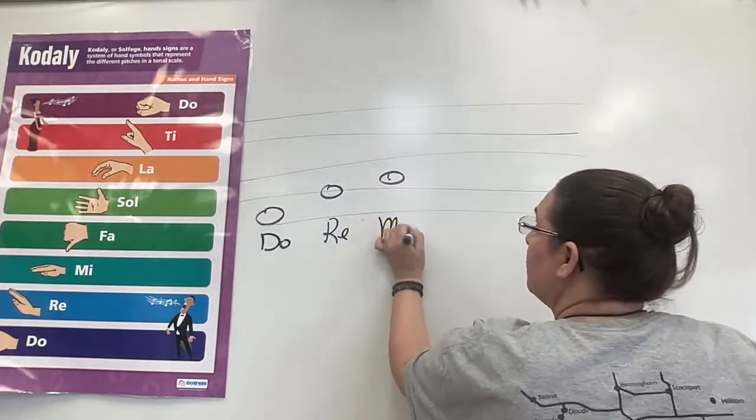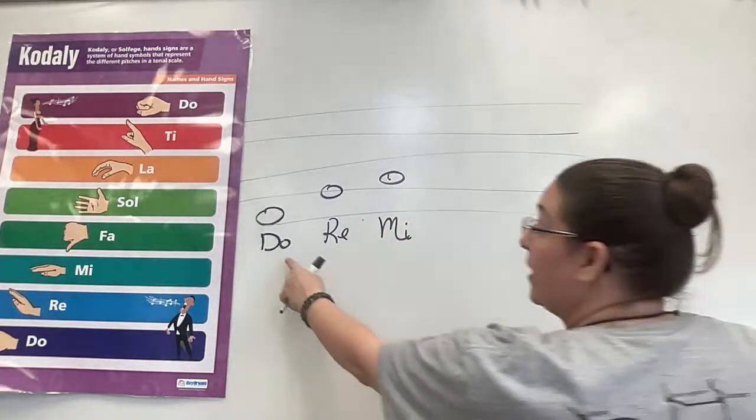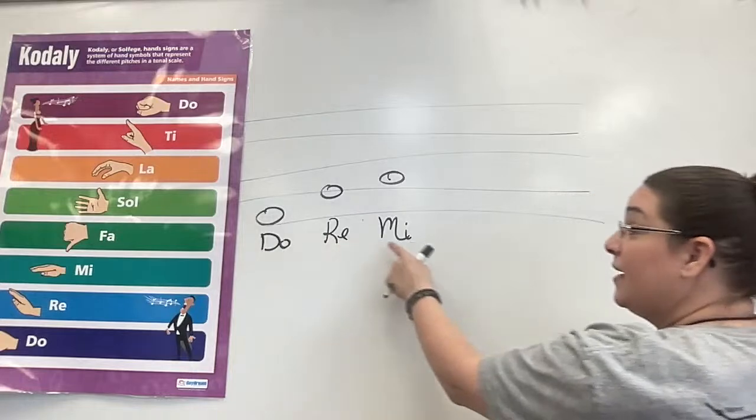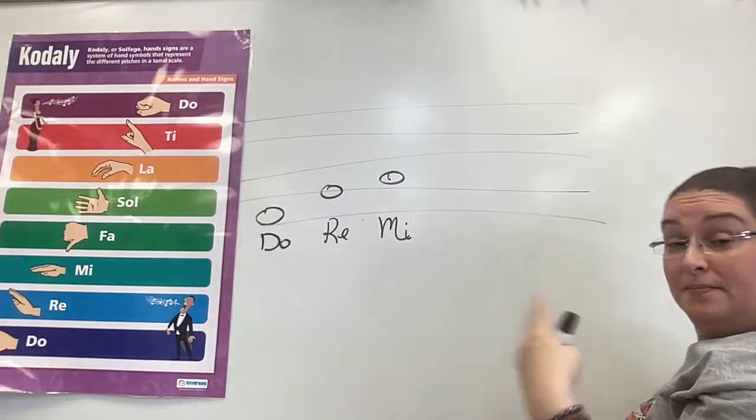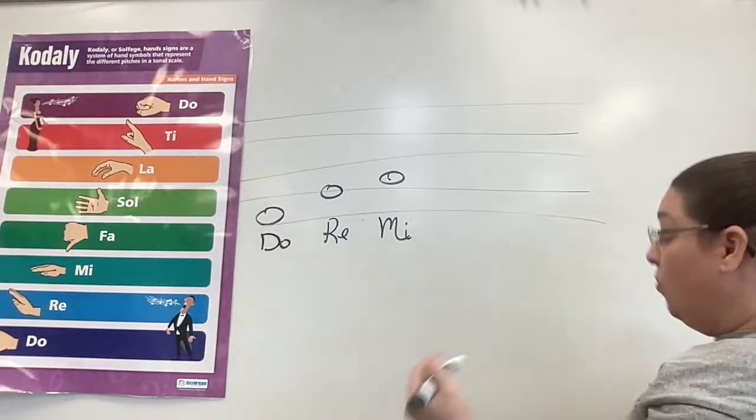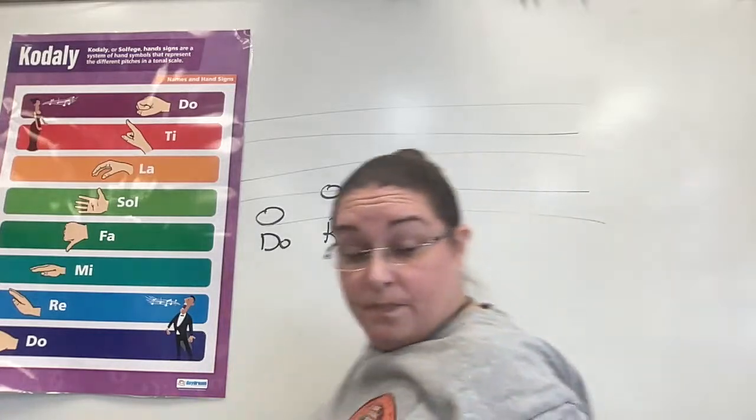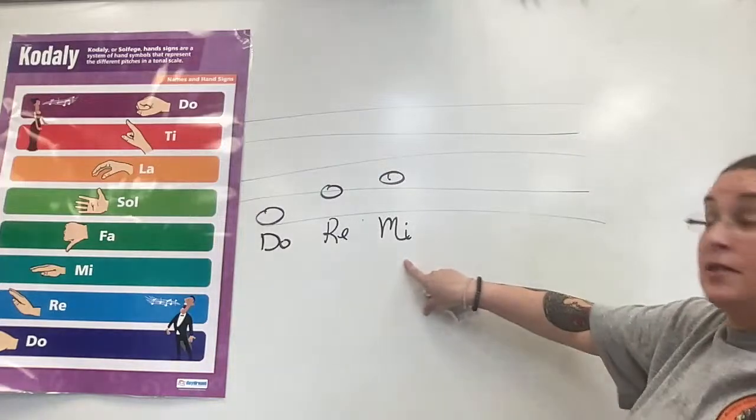So if I know those three pitches and I know this is Do, I can go Do, Re, Mi or Do, Re, Mi. It doesn't make a difference what it is. Now, this is easy as stepwise motion. So for example,